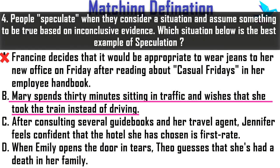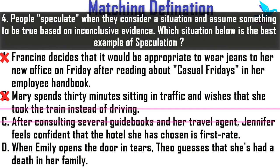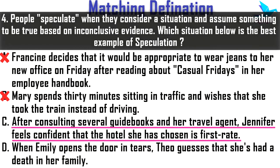Mary is not assuming anything to be true — she is simply wishing she had made a different decision, so this is also not speculation. Option three: After consulting several guidebooks and her travel agent, Jennifer feels confident that the hostel she chose is first rate. This is a case of confirmation about a decision made with the help of evidence, so this is also not speculation.